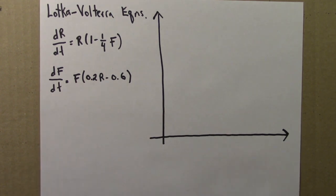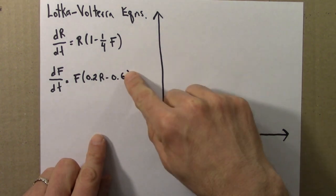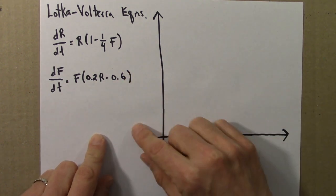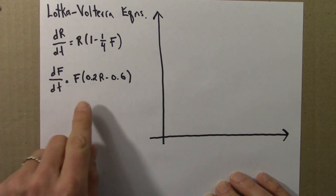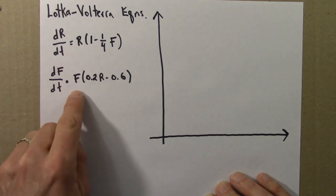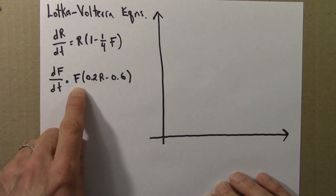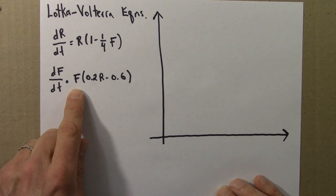And in a previous problem we found a fixed point for this. We find a fixed point by looking for r and f values that make both derivatives equal to 0. If both derivatives are 0 then we have a fixed point. So one fixed point is if r and f are both 0. And that's not very interesting biologically or mathematically. It just says if there are no rabbits and foxes there will remain no rabbits and foxes in this model.